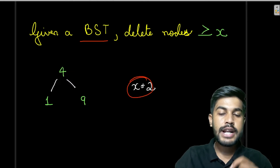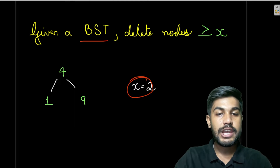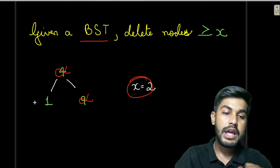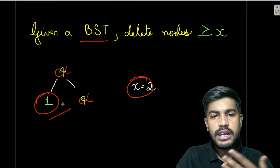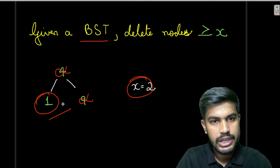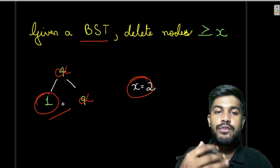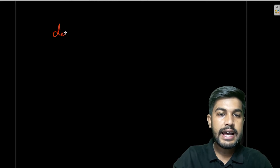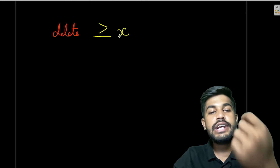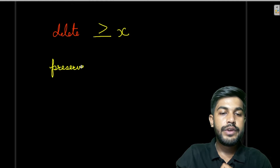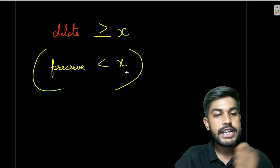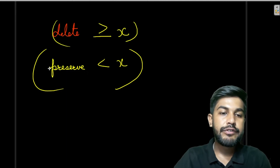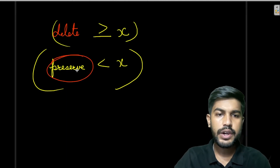We will be provided with a value x. Suppose x equals 2 — we need to remove all values greater than 2. So we would remove 4 because it is greater than 2, and remove 9 because it is greater than 2. We need to delete nodes greater than or equal to x and preserve nodes less than x, then return the preserved tree.